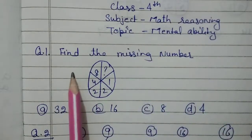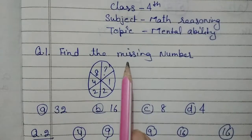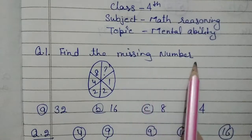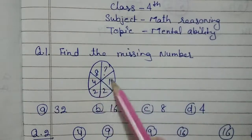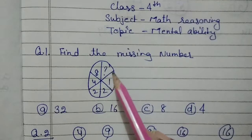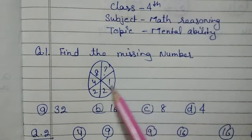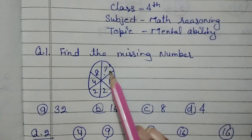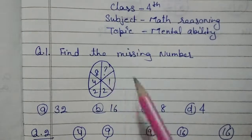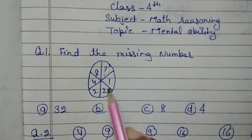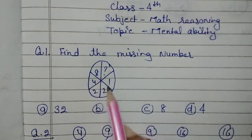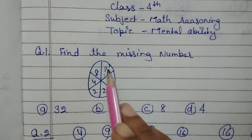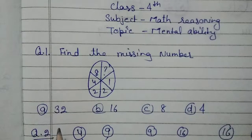Our first question is: find the missing number. A circle is given to you and there are some parts in it with some digits filled in, and one digit is missing. You have to find out that digit by finding the relation between the given digits.